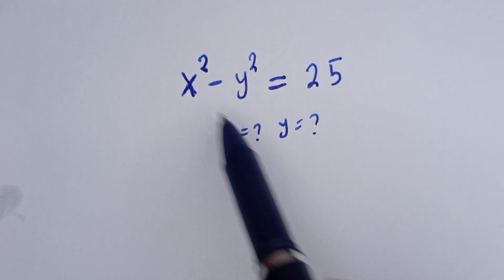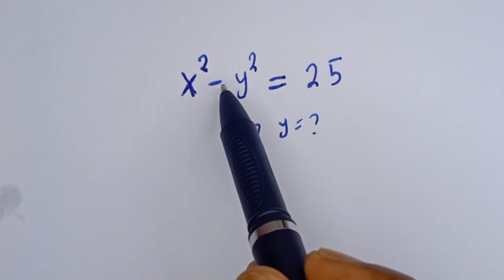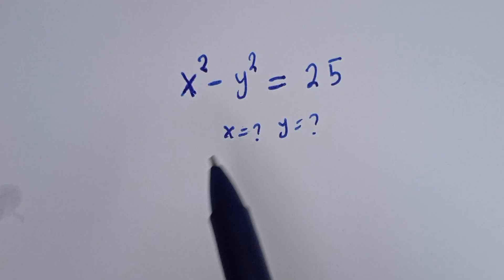Hello, I want to solve for X and Y in this equation. X squared minus Y squared is equal to 25.